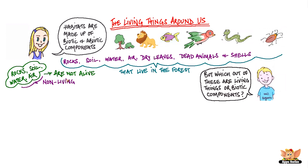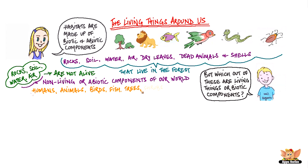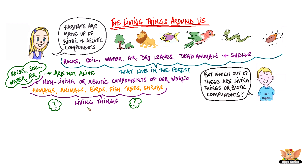Rocks, soil, water, and air make the non-living or abiotic components of our world. We know that humans, animals, birds, fish, trees, and shrubs are all living things or biotic components. But what makes these objects living things?